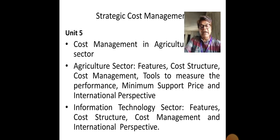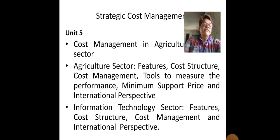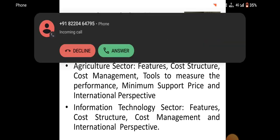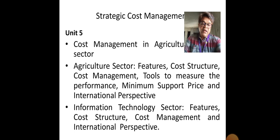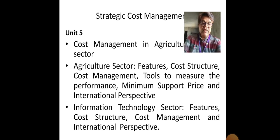Now, the second segment: the information technology sector. Regarding the cost structure of the IT sector, there are two components: fixed cost and variable cost. Fixed cost is the cost which is fixed or constant — it never changes with the level of services offered. For example, rent is fixed forever; whether the IT organization is offering services or not, they have to pay rent. Variable cost, as the name says, varies with the level of services offered by the IT sector.